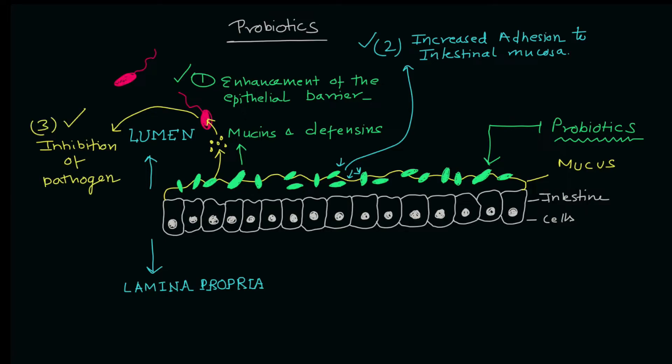Now let's talk about the fourth function. Fourth is these probiotics they try to exclude the pathogen so it's also known as competitive exclusion so they help in the competitive exclusion of the pathogenic organisms. So basically this is the fourth point.